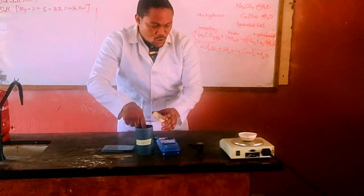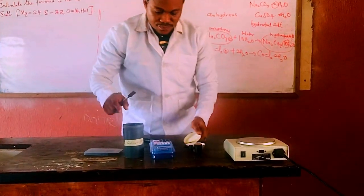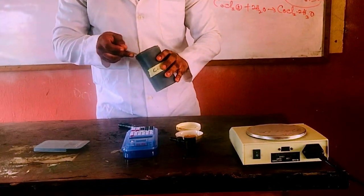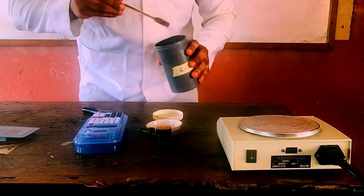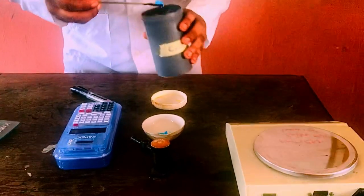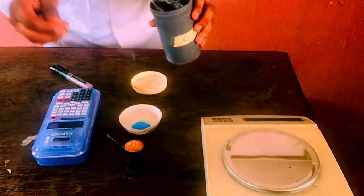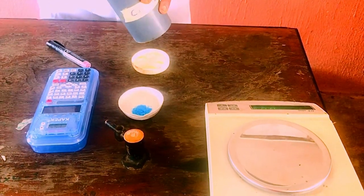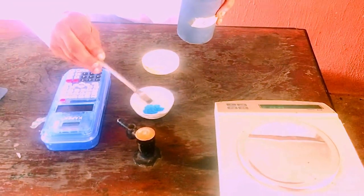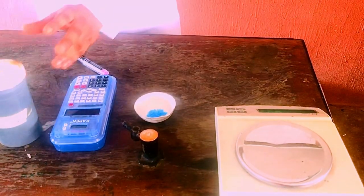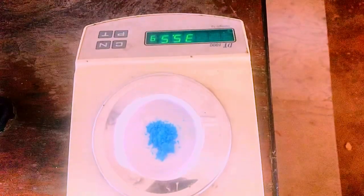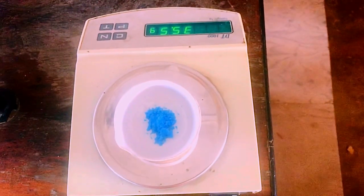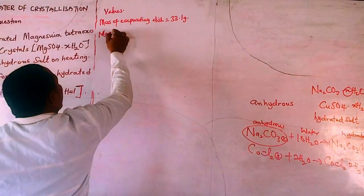Now we add a small quantity of the hydrated salt into the evaporating dish and weigh again. After adding the salt the balance reads 35.5 grams. So the mass of evaporating dish plus hydrated salt is 35.5 grams.